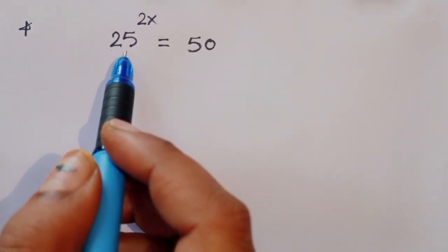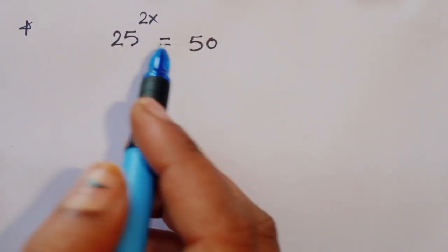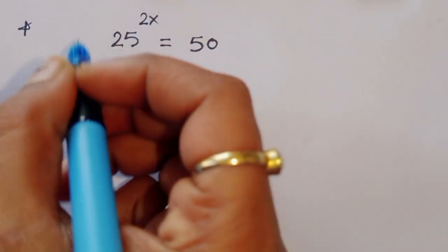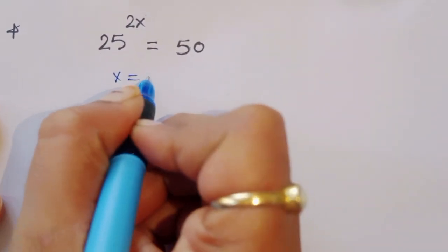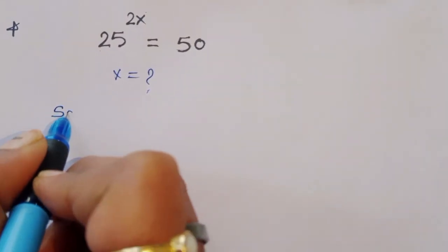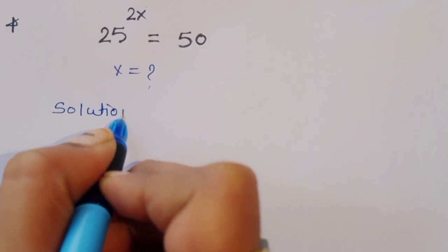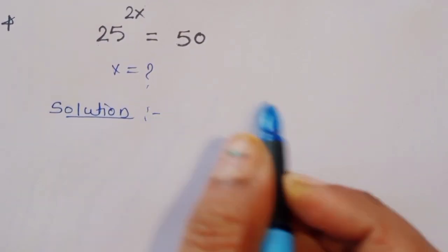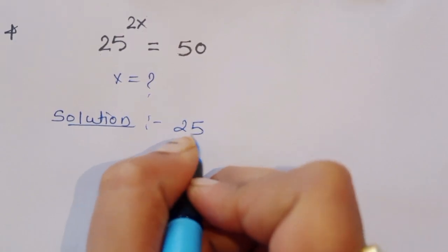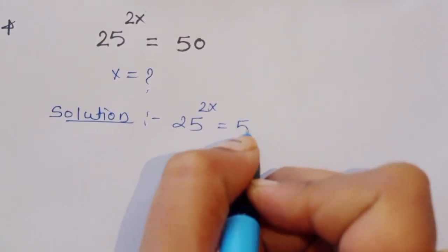The question is: given 25 raised to 2x is equal to 50, we have to find out the value of x. Now let's start the solution. What is given here: 25 raised to 2x is equal to 50.